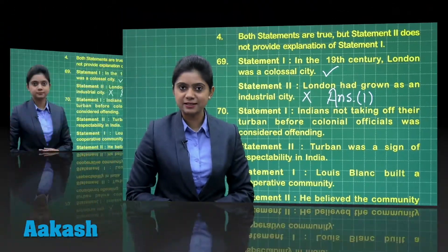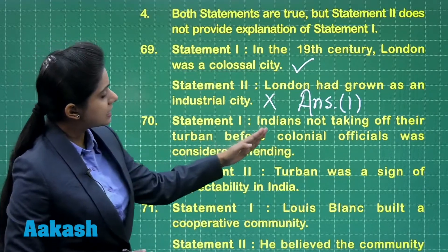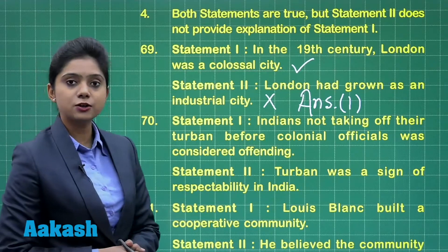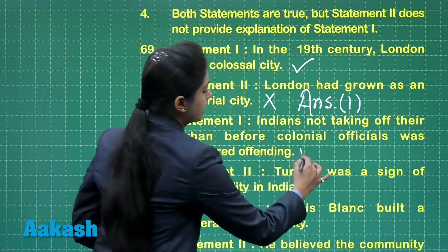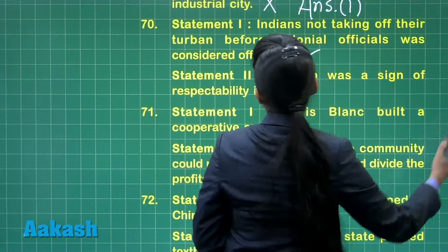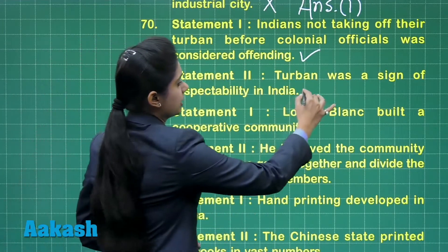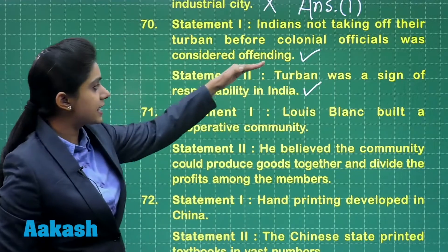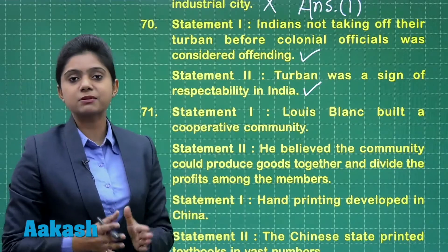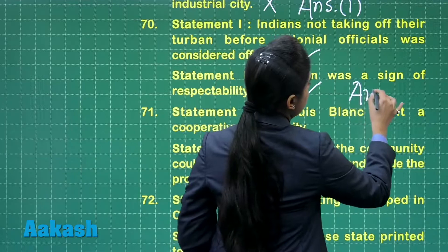Question 70: The first statement says Indians not taking off their turban before colonial officials was considered offending — this is a correct statement. The second statement says turban was a sign of respectability in India — this is also correct. Both statements are correct, but statement two does not provide a correct explanation for statement one. So our answer here is option number four.